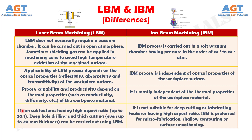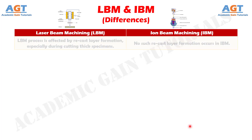Number 9. Laser beam machining can cut features having high aspect ratio, up to 50:1. Deep hole drilling and thick cutting, even up to 20 millimeters thickness, can be carried out using laser beam machining, whereas ion beam machining is not suitable for deep cutting or fabricating features having high aspect ratio. IBM is preferred for microfabrication, shallow contouring, or surface smoothening.